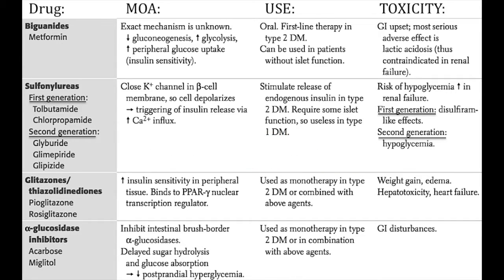The thiazolidinediones, which include pioglitazone and rosiglitazone, act to increase insulin sensitivity in peripheral tissues by binding to the PPAR-gamma nuclear transcription regulator. Major side effects of these drugs include weight gain, edema, and hepatotoxicity. They are contraindicated in patients with heart failure.